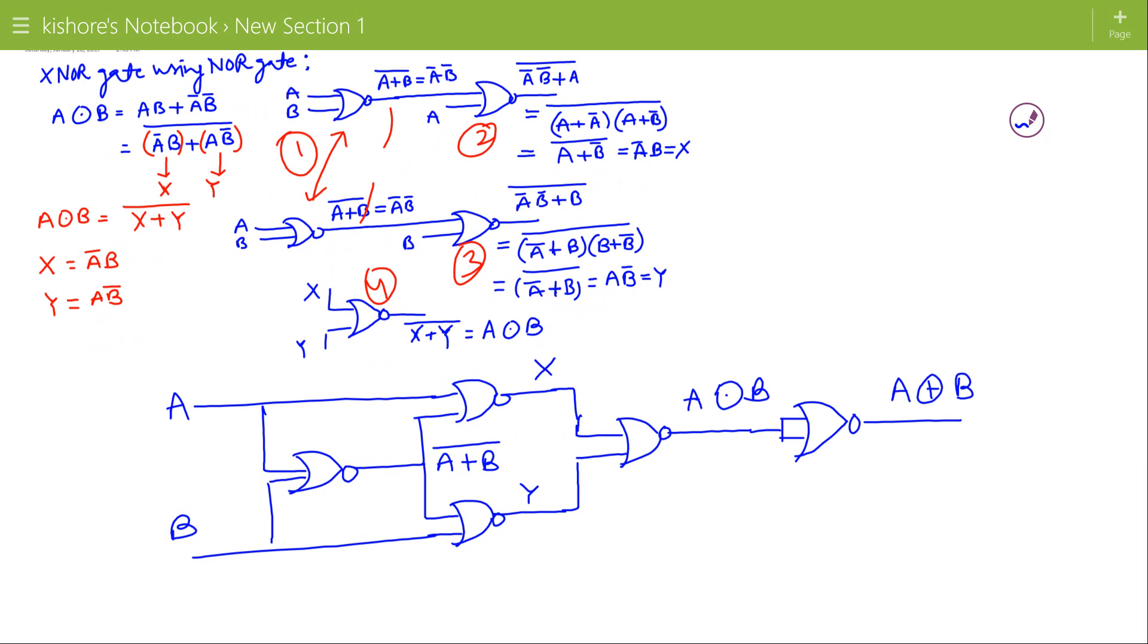To realize exclusive OR gate using NOR gate, five NOR gates are required. And to make exclusive NOR using NOR gates, four NOR gates are required.